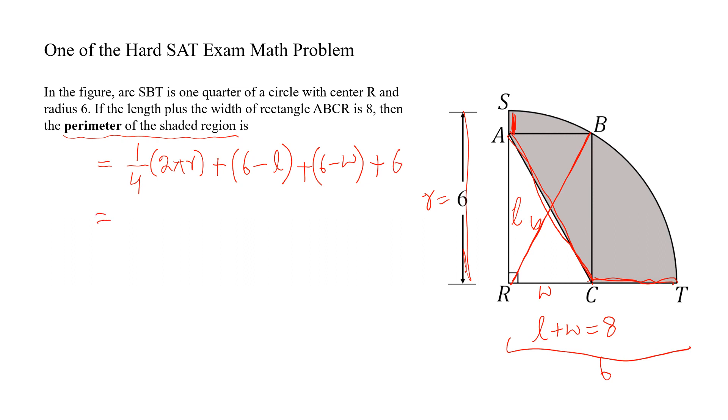Now just simplify this and put r equals 6 here. 2π into 6 plus 6, 6, 6. This is 18 minus length plus width.